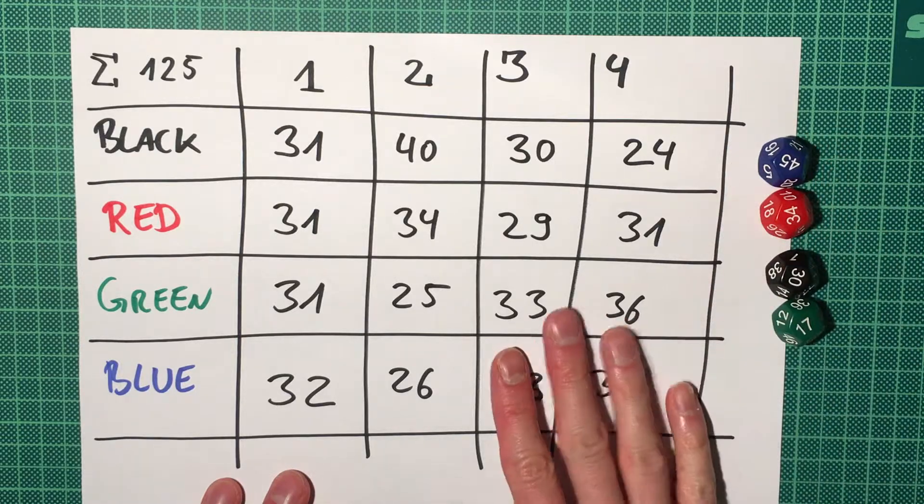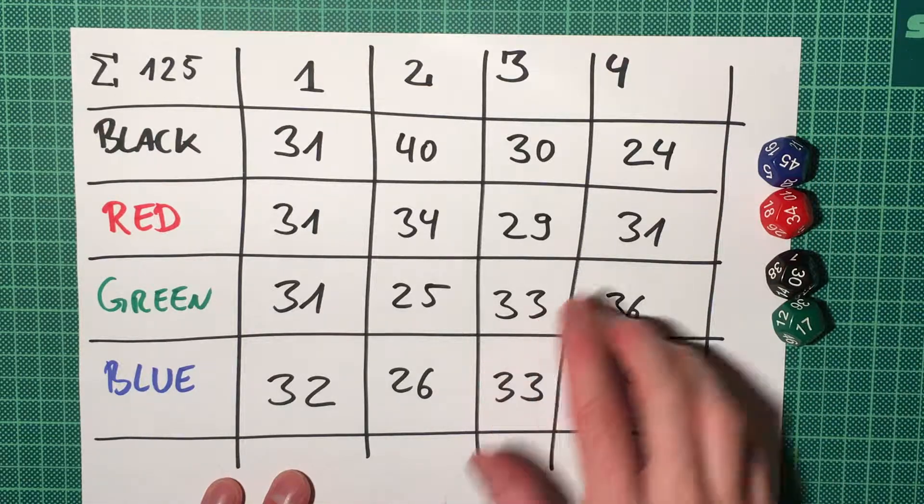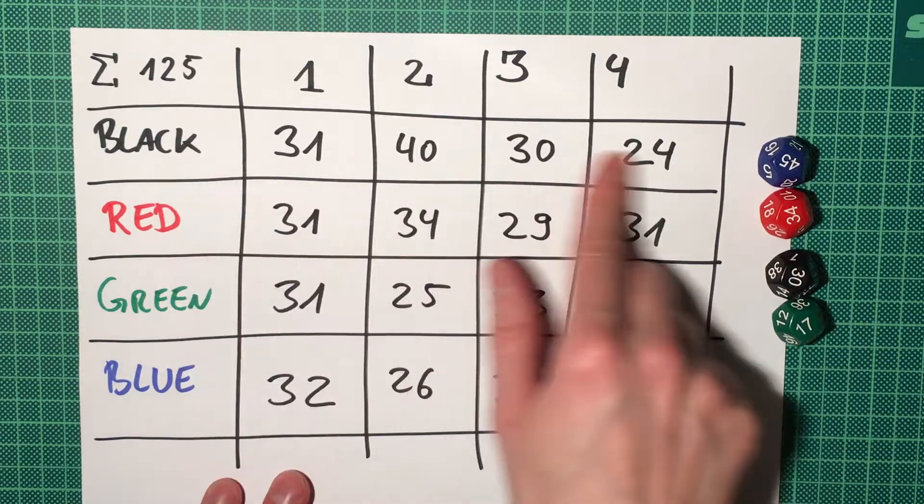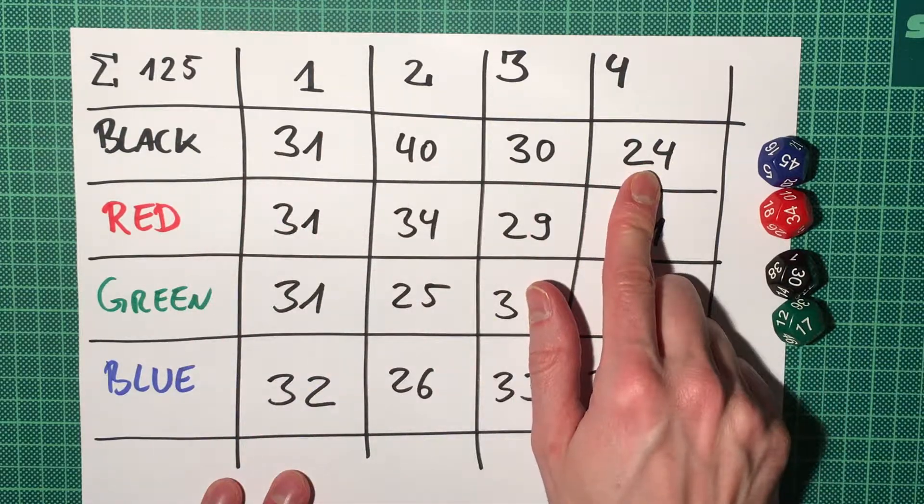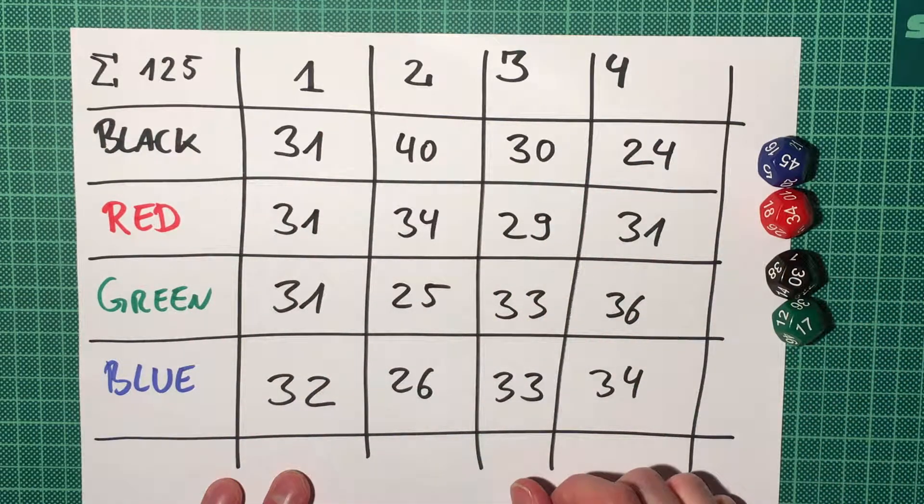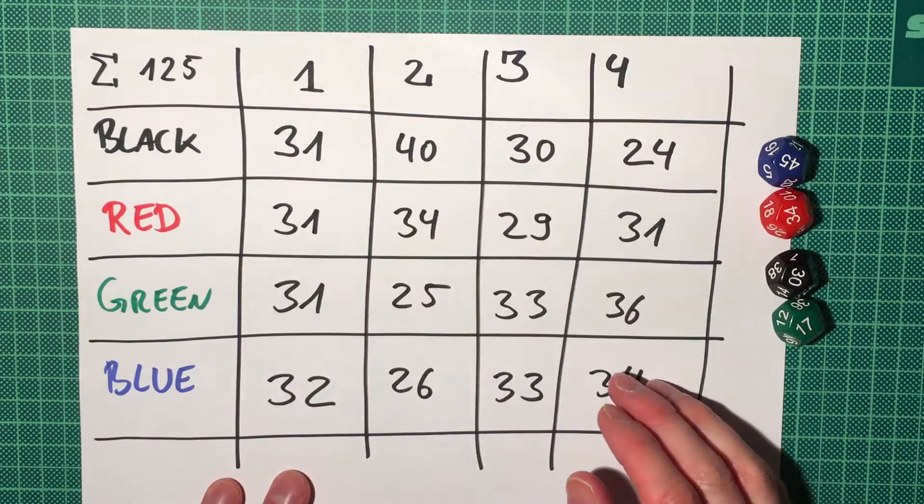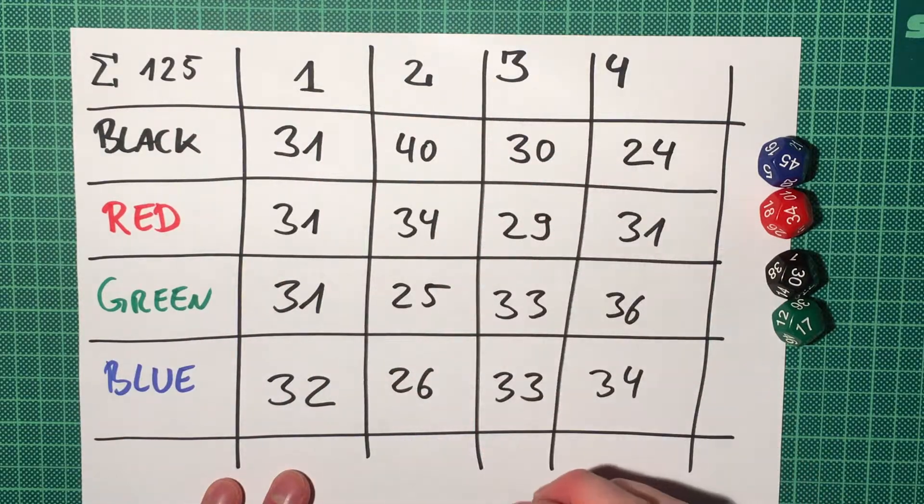With this result, I would rather say if you don't want to turn out last, please don't use the black die. But as I said, if you take 100 more, this result might turn out quite differently.